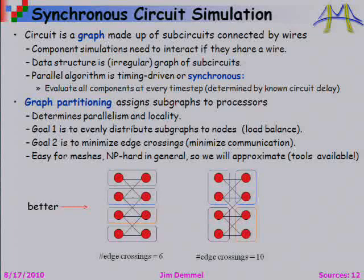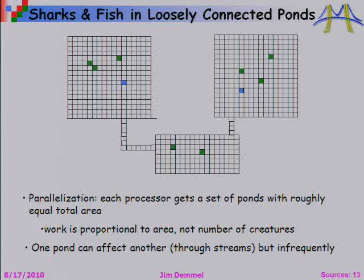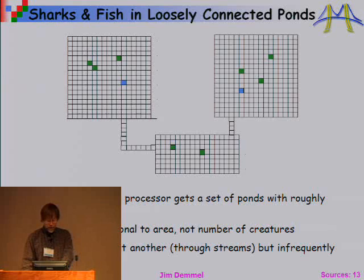Let me continue illustrating different flavors of this load balancing and parallelization problem. Imagine you're simulating sharks and fish in very loosely connected ponds — lots of connectivity within each pond but relatively limited influence between ponds. It's pretty natural to say each pond is a unit, and you assign entire units to different processors to achieve load balance while minimizing edges connecting them. This is another version of the circuit simulation graph partitioning problem.